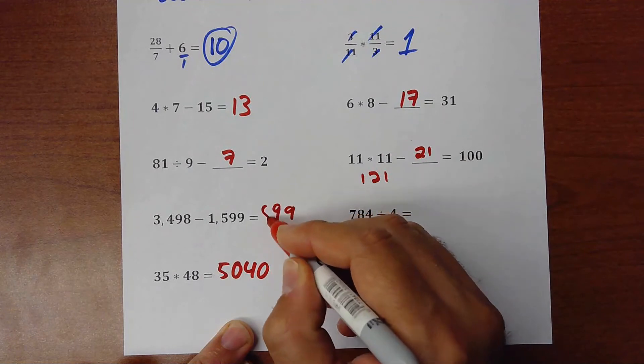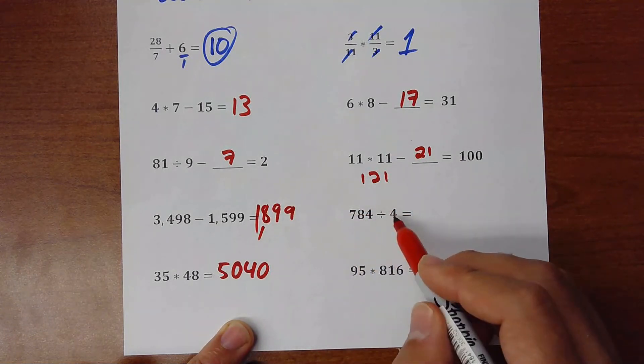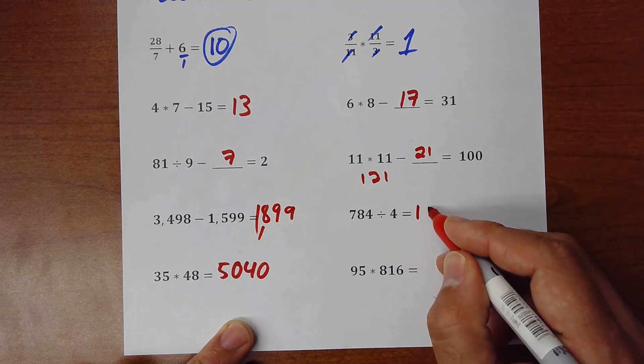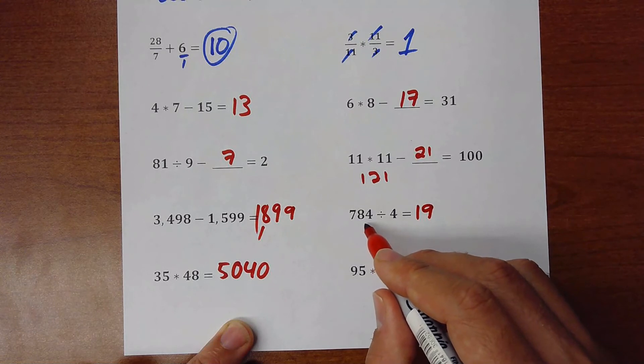It will be 1899. Here. Here you divide it. 784 divided by 4. It will be 196.